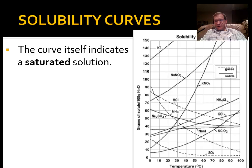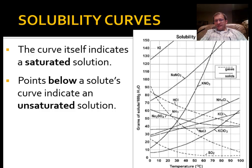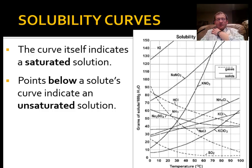A solubility curve itself — the lines you see on the sheet — this one has about 10 or 12 different curves on it. Each of those lines represents the maximum amount of solute that can be dissolved at a given temperature. As temperature changes, the solubility on the y-axis goes up or down. Any point on the line represents a saturated solution. Any points under the curve would indicate an unsaturated solution — something less than that maximum. The solubility curve's maximum amount is very specific for the substance at a given temperature.